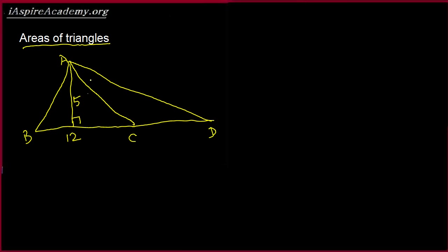And if we know that these two triangles, triangle ABC, has the same area as triangle ACD, then what is the length of CD? So that's our problem. Let's say CD is X. So what is X?